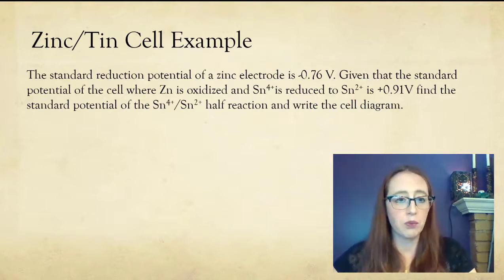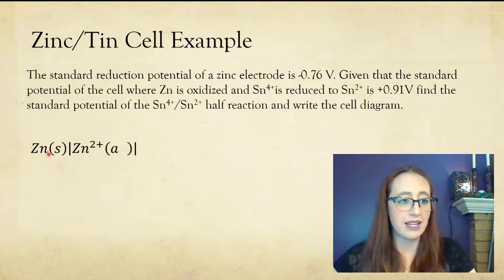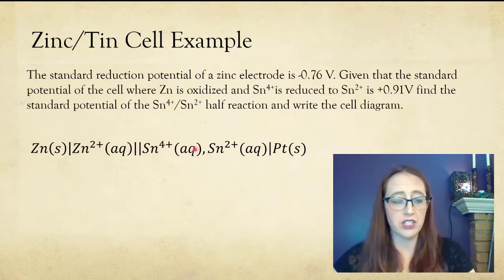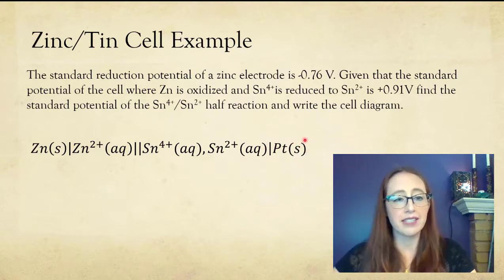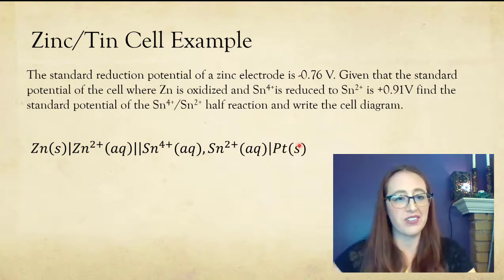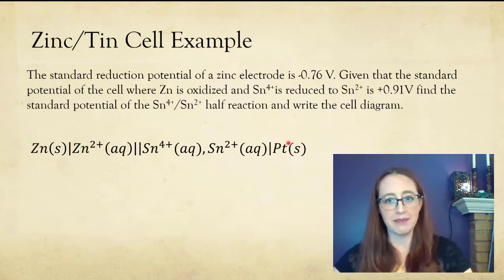So when we write this out, we'll go zinc solid goes to zinc two plus. Then we hit our salt bridge. We have our two tin ions. And you just put a comma because there's no phase change. So you just use a comma to separate it. And then we're going to need some sort of inert electrode again, because it can't just jump in. It needs something to transfer. And so we're going to use something like platinum for that.